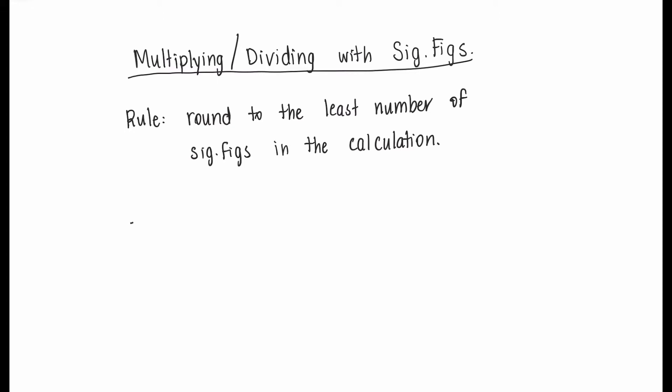Let's look at an example of multiplying with significant figures. Let's take 27 multiplied by 431. Now the first step is to just do the calculation. You can type this into your calculator, and you should end up with 11,637.